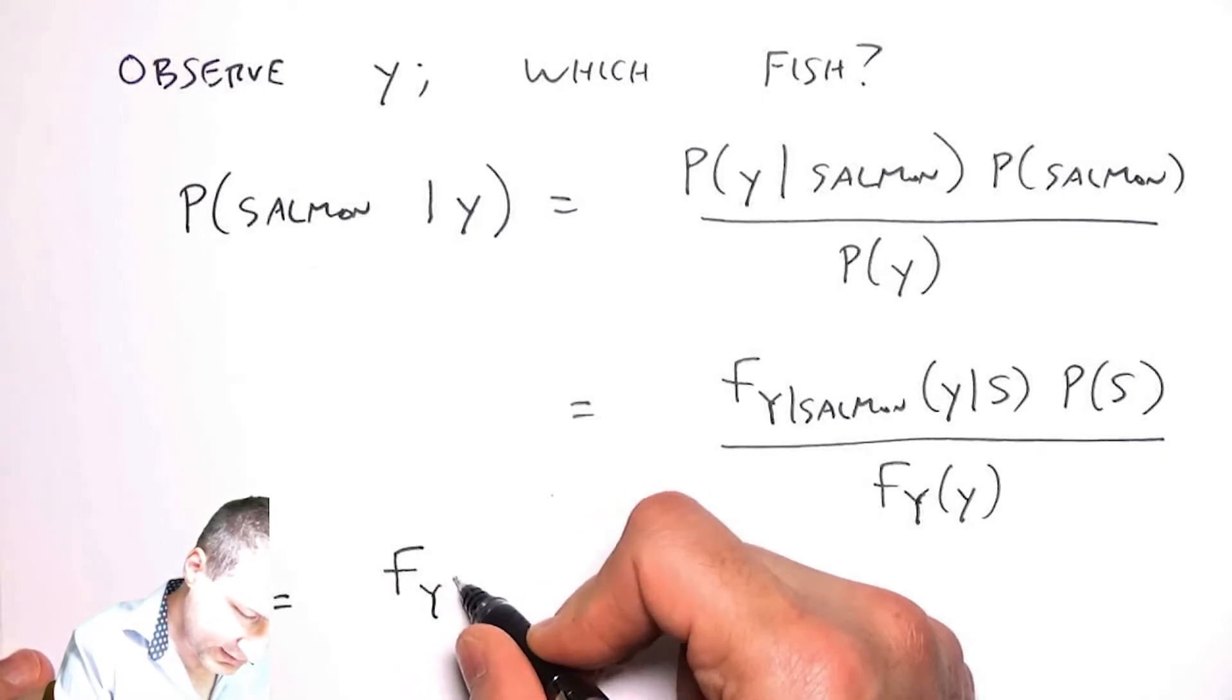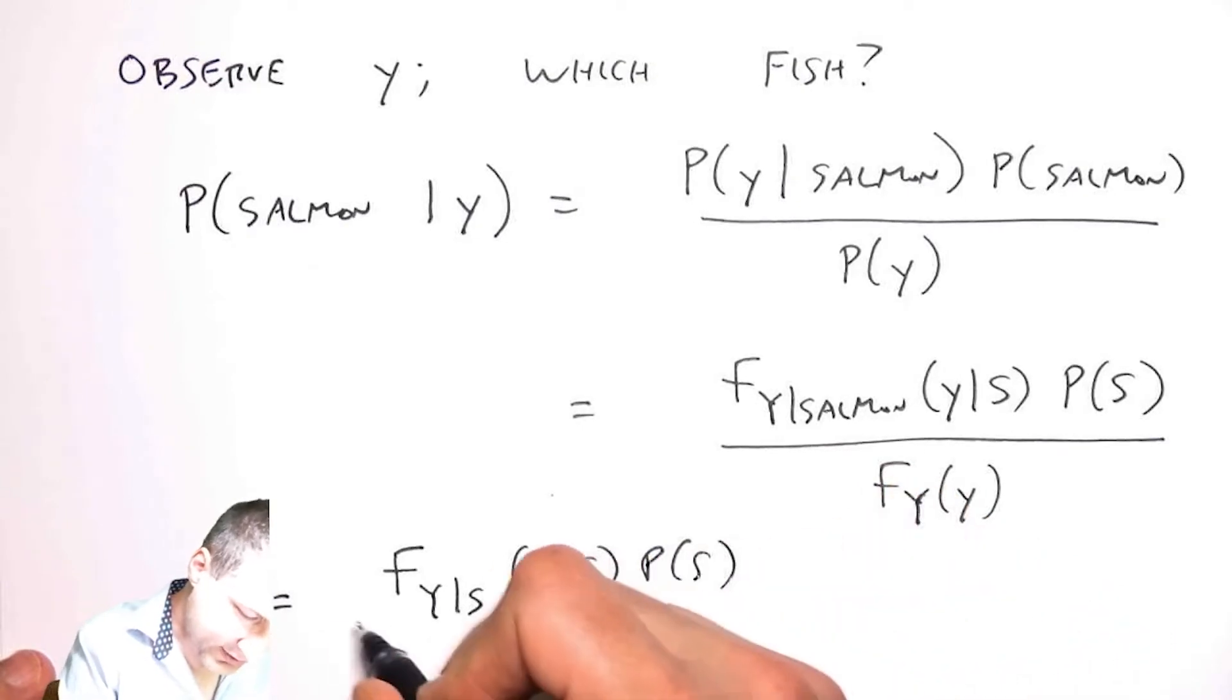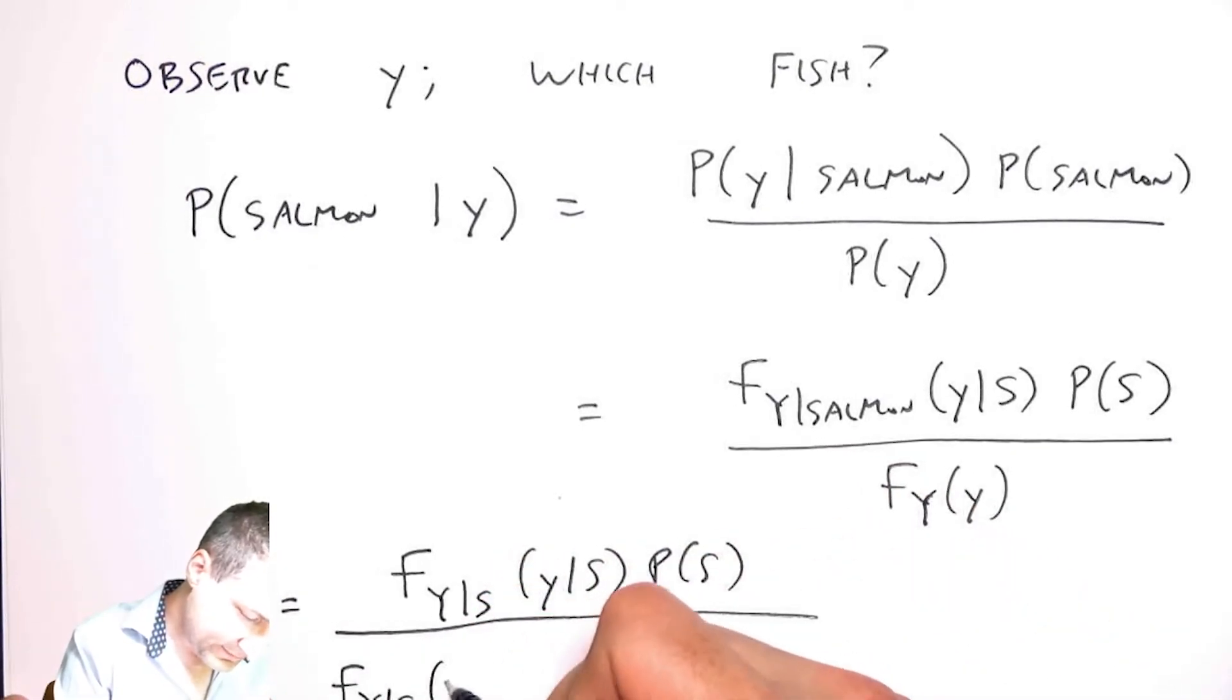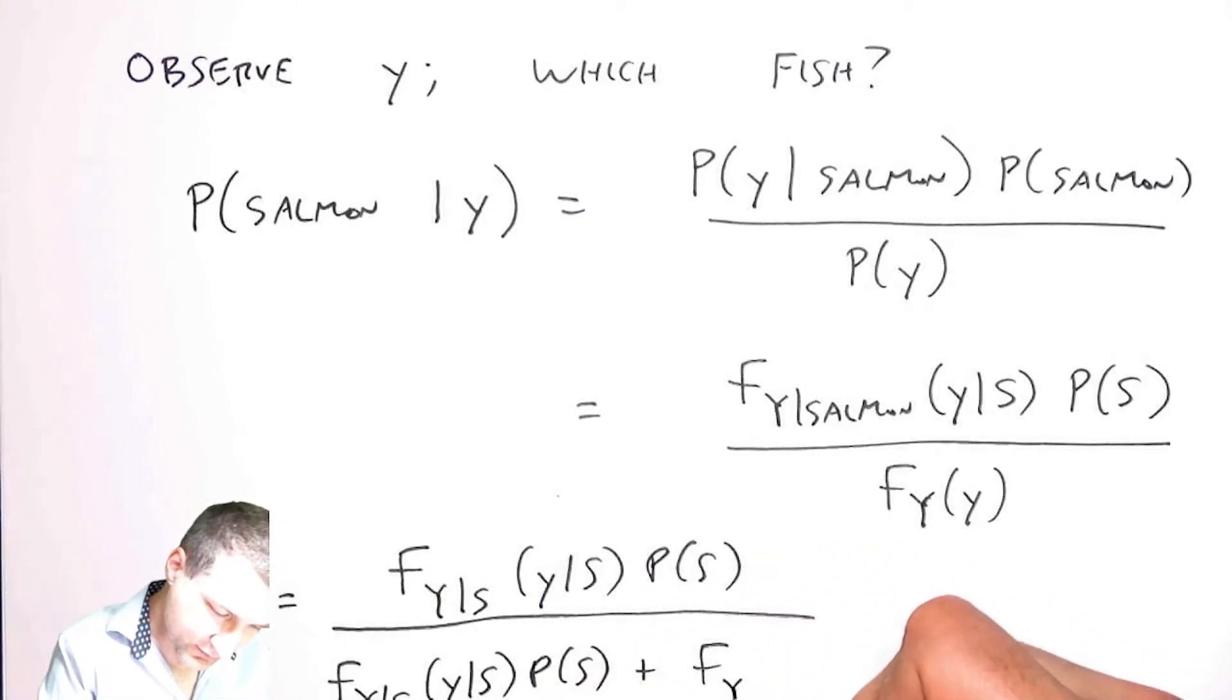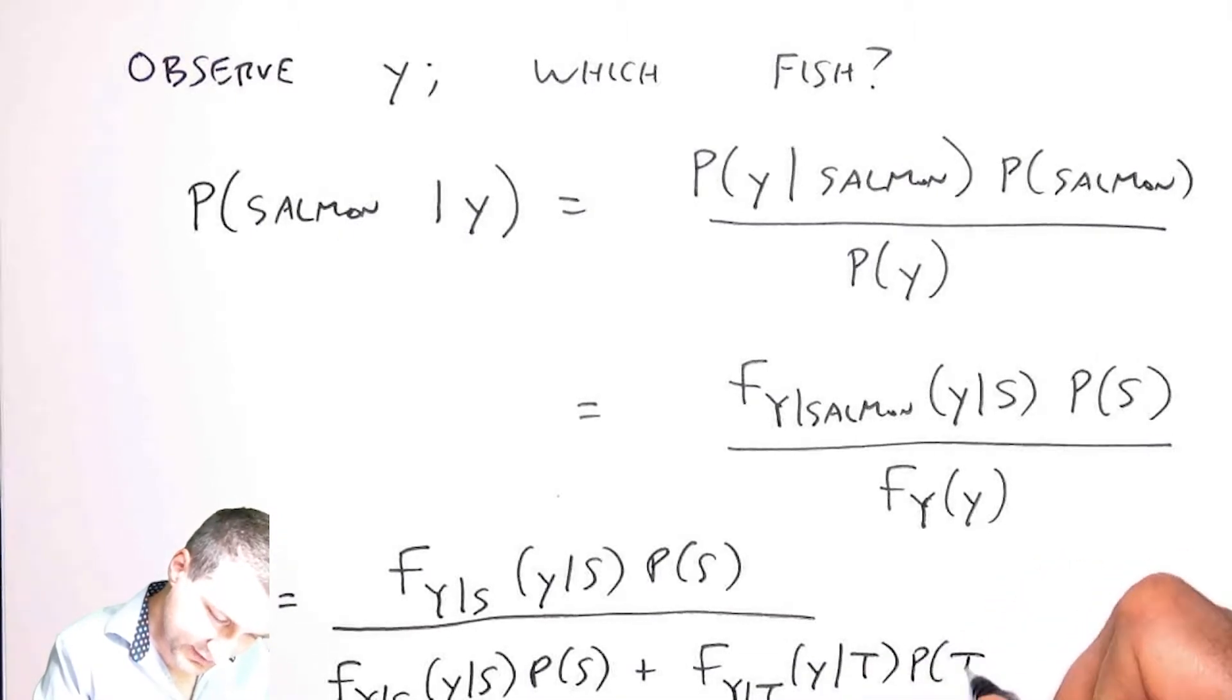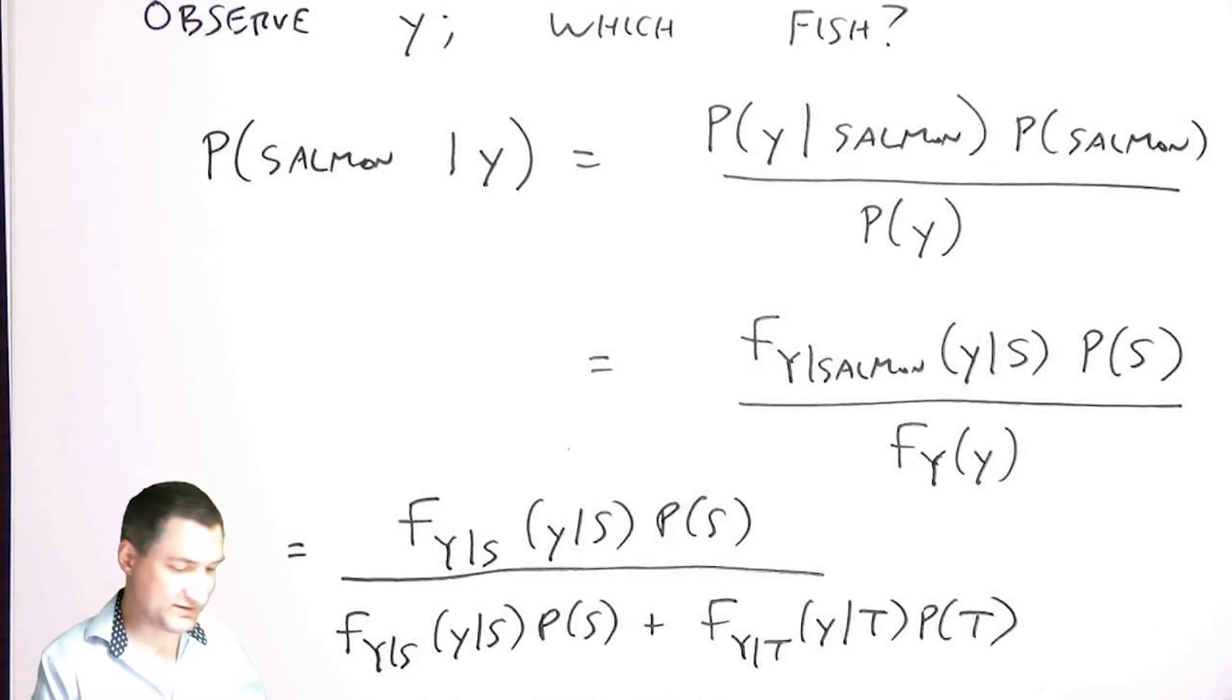The bottom part, if I wanted to really expand it by the law of total probability, is how can I get y? There are two ways: either I could have salmon or tuna. The law of total probability tells me that these two things add up to give me the whole thing. So this is the total probability theorem on the bottom.